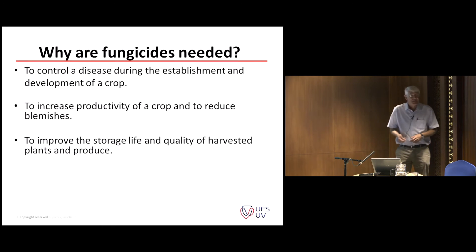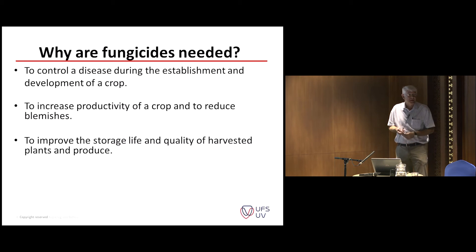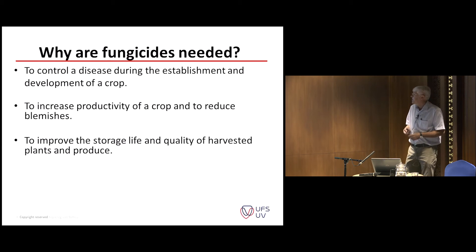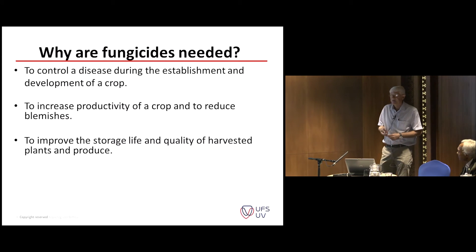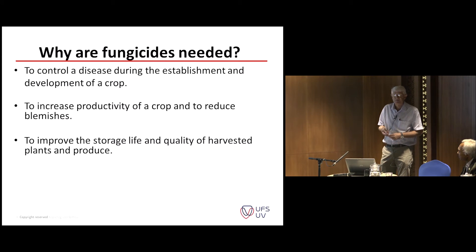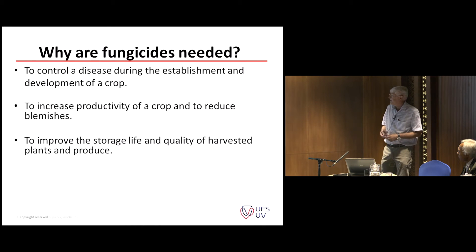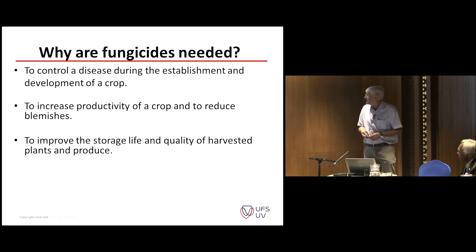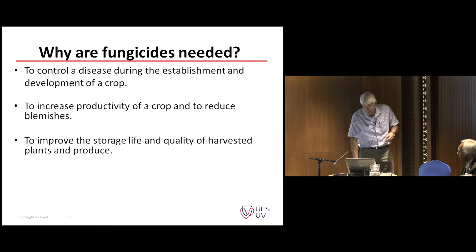Why do we need these compounds? Firstly, we would like to establish a good crop — a good stand. Secondly, we want to increase productivity, reduce blemishes and spots, and make the crop attractive for the consumer. And finally, to improve the storage life and quality of our harvested products. So there are a few important reasons why we use these chemicals.